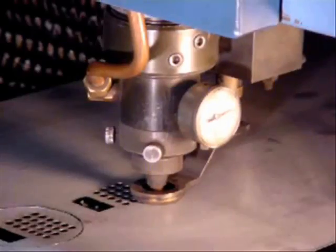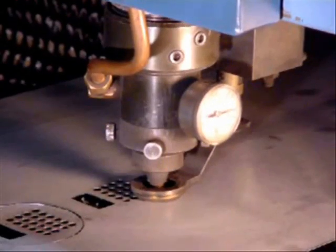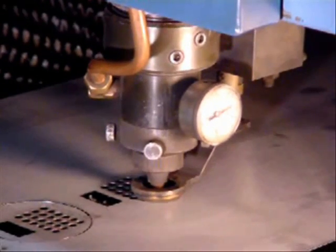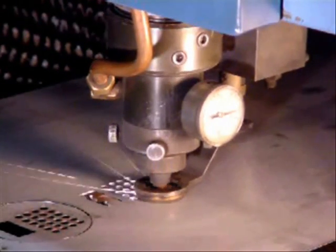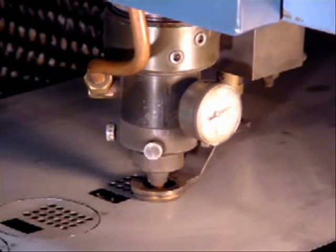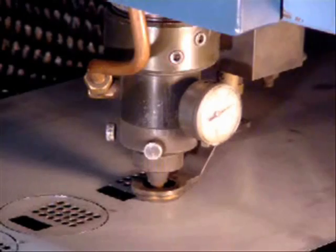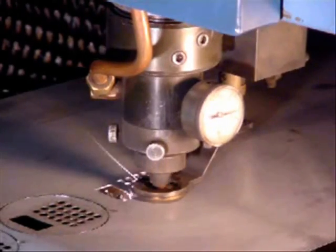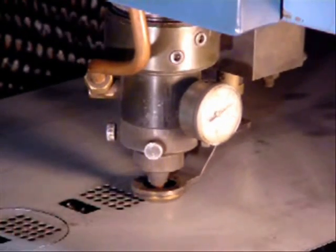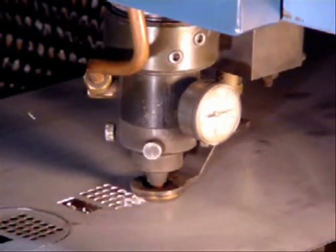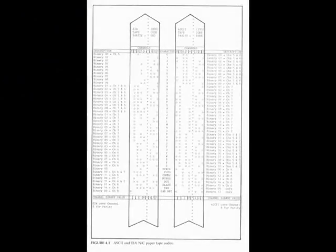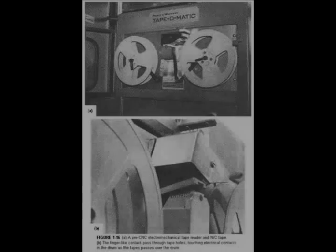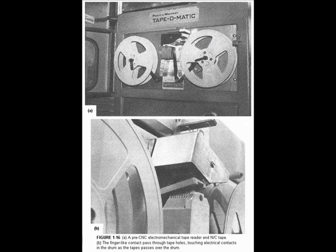What is NC? NC is the acronym for Numerical Control, which is the process in which sets of code are used to program a controller and direct the motions of a machining tool. Early NC programming consisted of punch cards and paper tape, which were read by the machines as usable code.